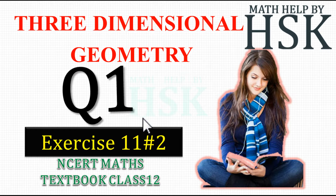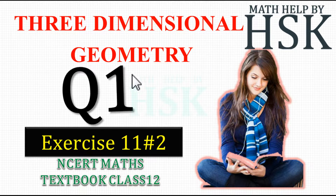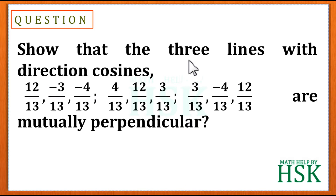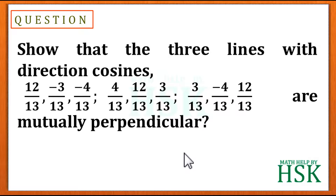Taking question number one of Exercise 11.2 of three-dimensional coordinate geometry from NCERT Maths textbook Class 12. The question is: show that the three lines with direction cosines as given are mutually perpendicular. It is a very simple question.